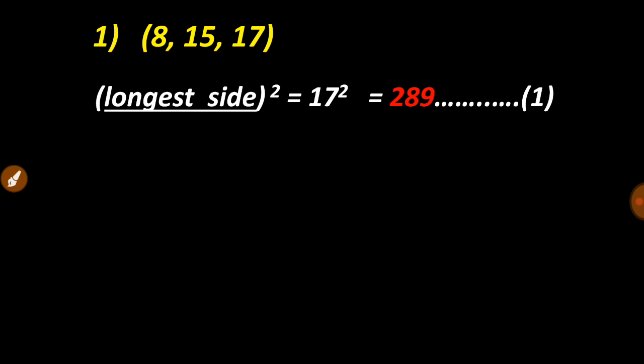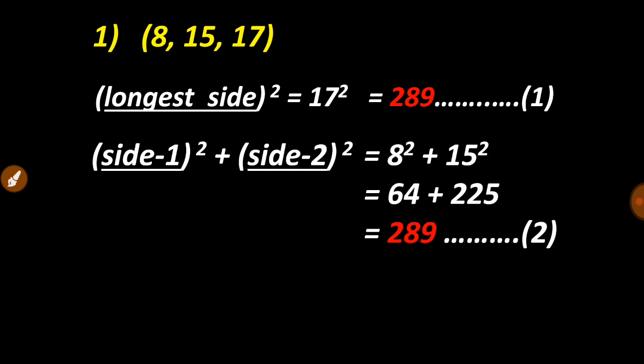The second step includes sum of square of remaining two sides: side-1 square, that is 8, and side-2 square, that is 15. What do we get? We get again 289. If these two steps—longest side square and the sum of square of remaining two sides—are equal to each other...